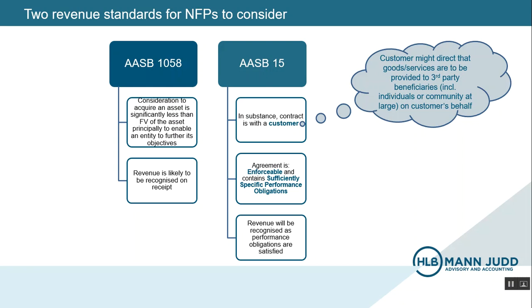However, if you're an NFP organization, I strongly recommend that you look at Appendix F. It's relatively short, about five pages, and provides some really helpful guidance on how the principles of AASB 15 apply in the not-for-profit context.